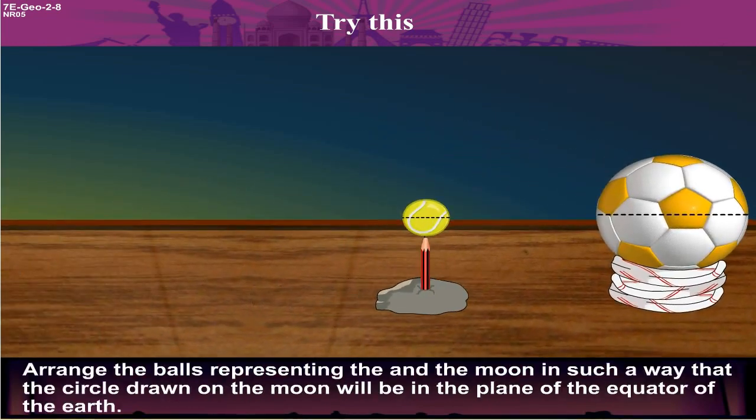Arrange the balls representing the earth and the moon in such a way that the circle drawn on the moon will be in the plane of the equator of the earth.